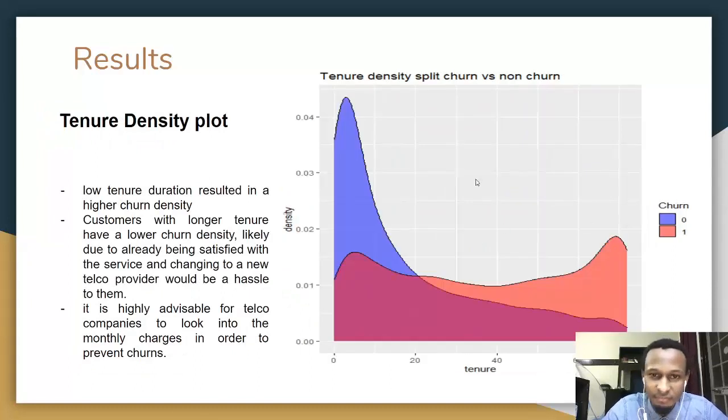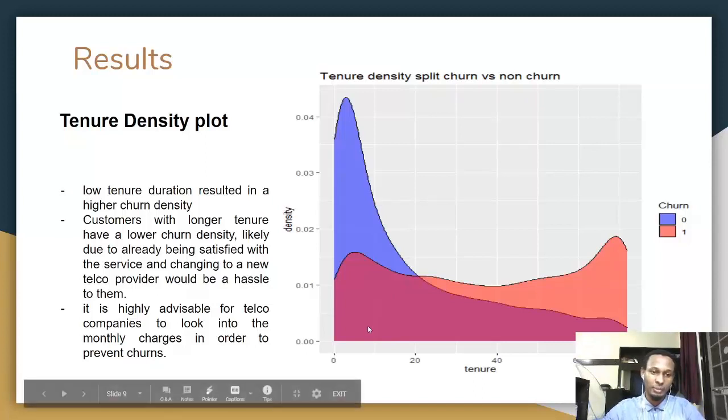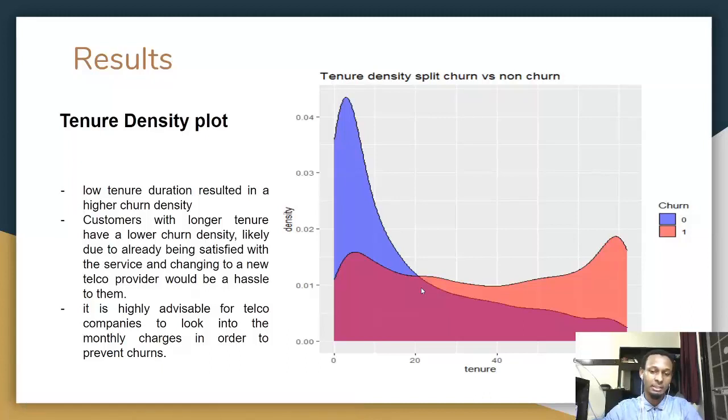This graph is the tenure density plot. We can observe that the lower the tenure duration for the customer, the higher rate of churn. Customers with longer tenure have a lower churn density, likely due to the customer already being satisfied with the service, and changing to a new telco provider will be hassle to them. It is highly advisable for telco companies to look into these monthly charges in order to prevent customer from churning.